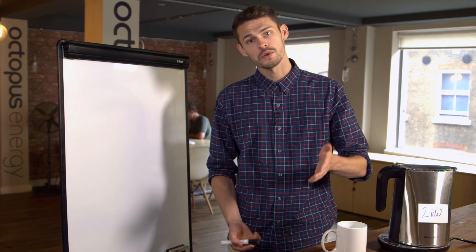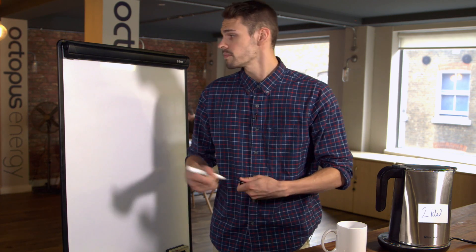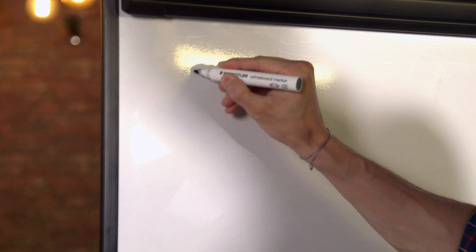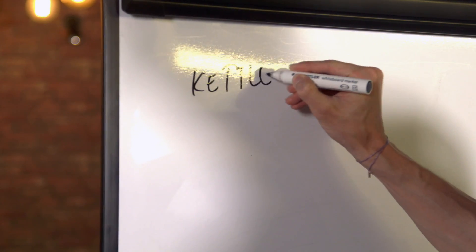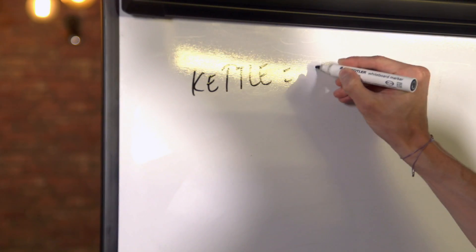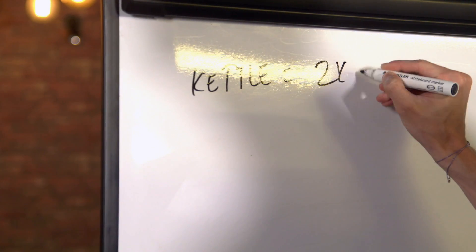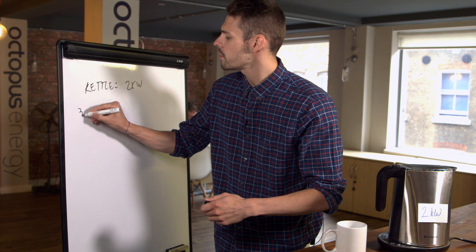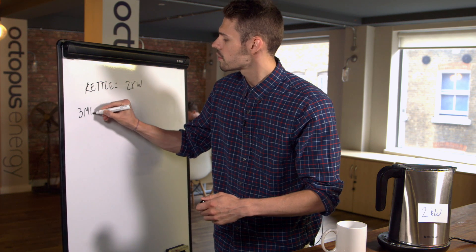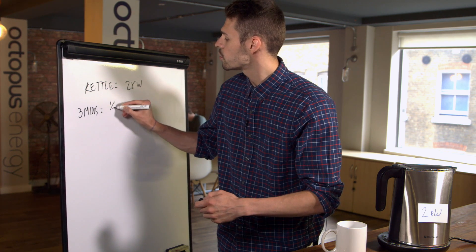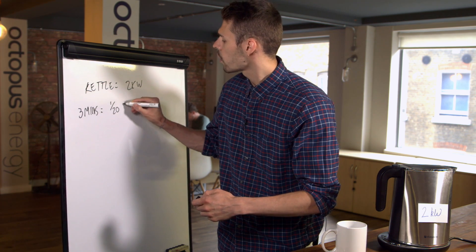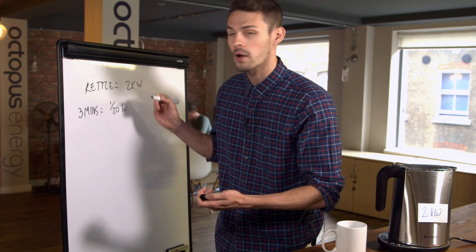So if we do a quick calculation, we've got a kettle at two kilowatts and then we've got three minutes, which is equal to 1/20th of an hour.